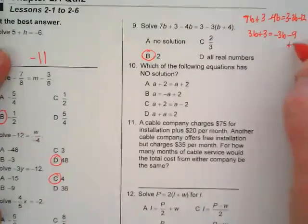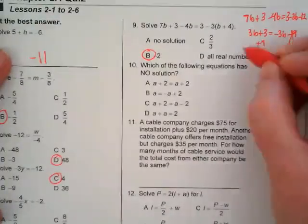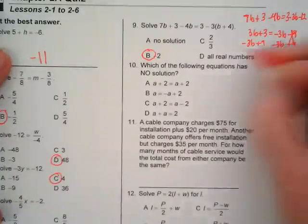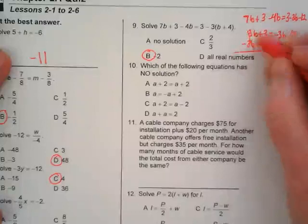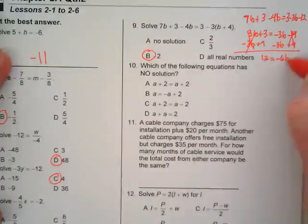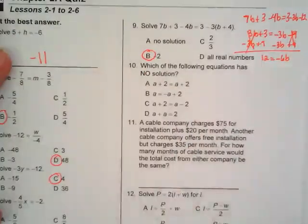I'm going to add the 9 to both sides, canceling that, and I'm going to subtract the 3b from both sides. That's going to give me this cancelled over here. I get 12 equals negative 6b, divide by the negative 6, we get negative 2.